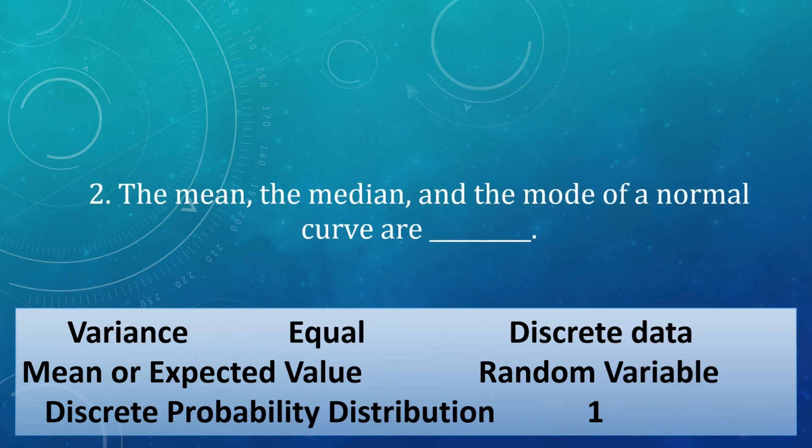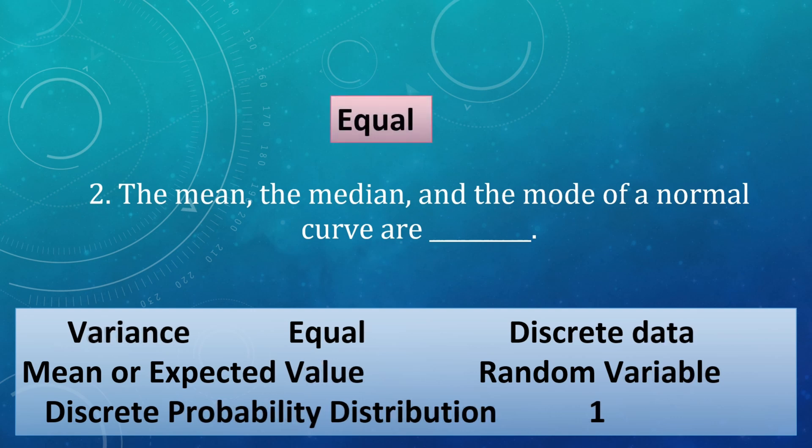Next, the mean, median, and mode of a normal curve distribution are... Choose your answer. Are you done? The answer is equal.